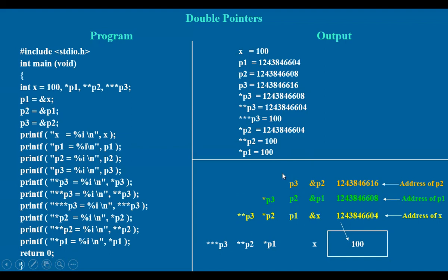If you can just imagine this picture, from this picture you can clearly get what the address is and how to get the value of it clearly. This will give you a clear picture. And suppose still if you want the address of p3, you can write ampersand p3 — of course this is not defined here, this is just to have a clear picture of it. The address of p3 also can be obtained by just saying ampersand p3.